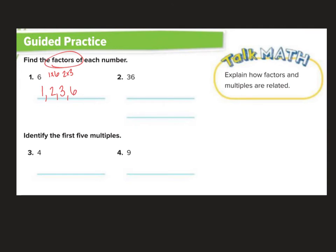Now for 36 I could do 1 times 36, 2 times 18, 3 times 12, 4 times 9, 5 does not. 6, yeah, 6 times 6. 7? No. 8? No. 9? No. 10? No. So I usually like to go up to 10.